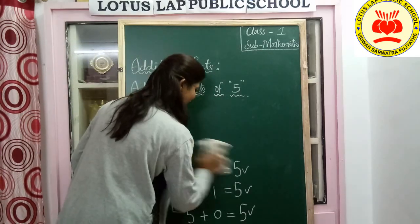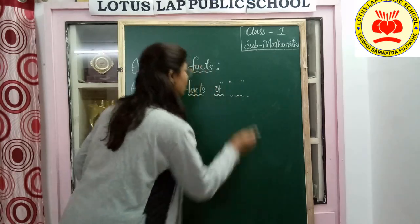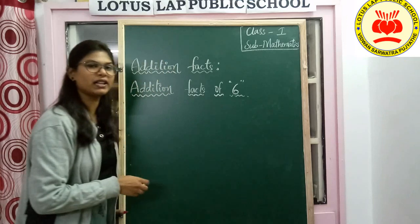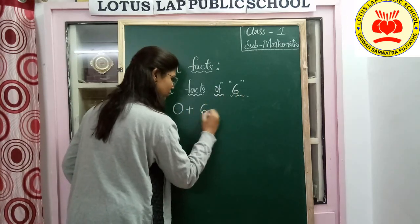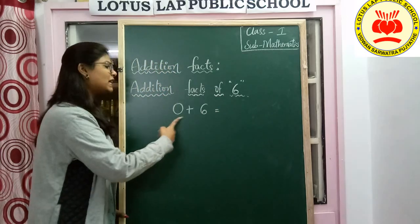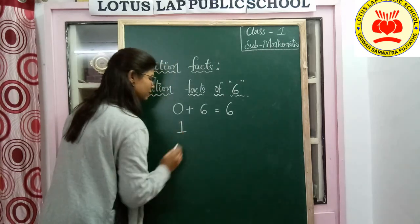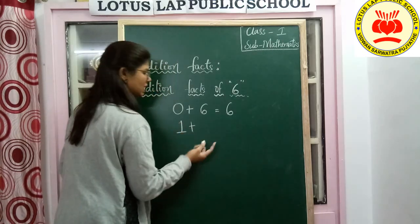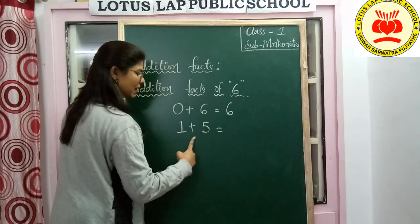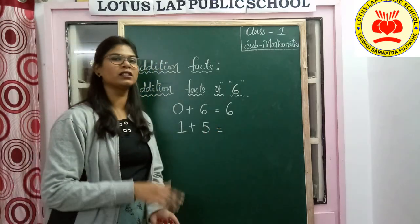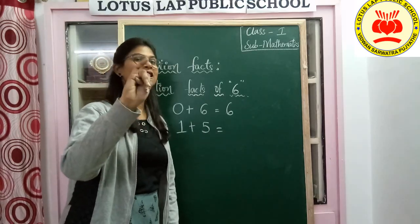Here let's find the addition facts of 6. Hope you all are understanding this concept, children. 0 plus 6 — the answer we get is 6. Now let's take 1. 1 plus — the before number of 6 is 5. 1 plus 5. 1 after — 2, 3, 4, 5, 6.